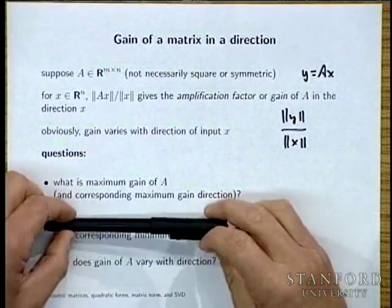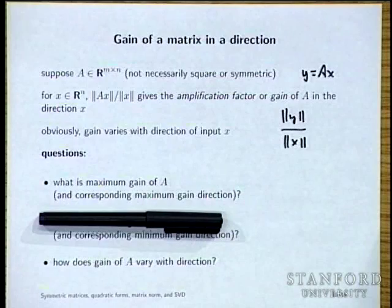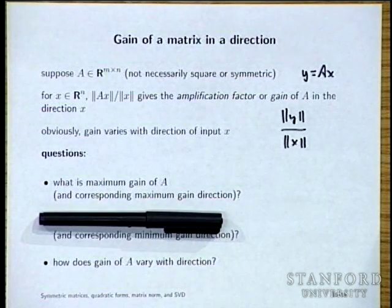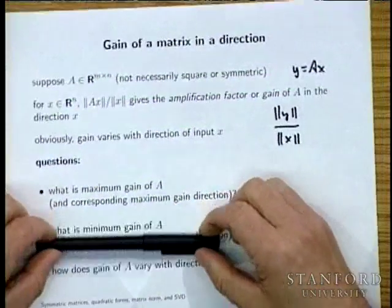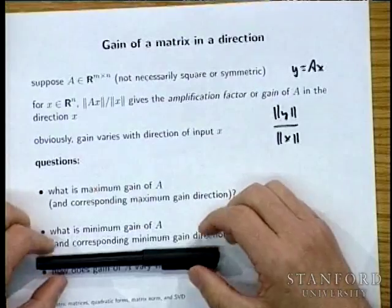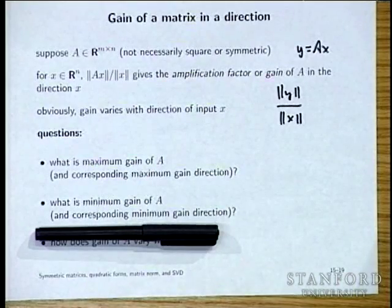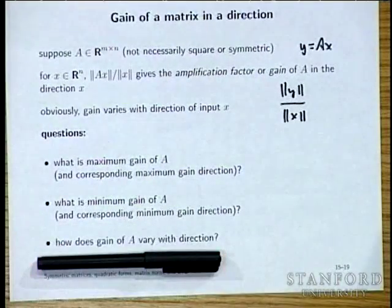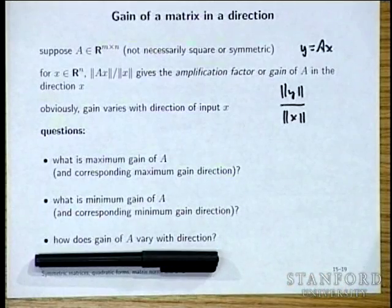We want to ask: what is the maximum gain of a matrix, and what input direction achieves it? What is the minimum gain and its corresponding direction? How does the gain of a matrix vary with direction? These questions are extremely profound and unbelievably useful.